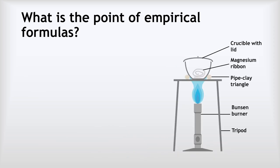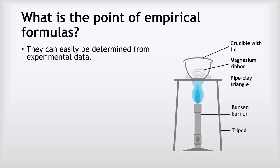You may be wondering: what is the point of empirical formulas? They seem like just a less useful version of the molecular formula. But they've got one key advantage — they can easily be determined from experimental data. If you put yourself in the mindset of a chemist in the 1800s, they didn't have access to sophisticated equipment. All they could do was simple experiments to find the masses of each element in their compounds, and from that they could work out an empirical formula.